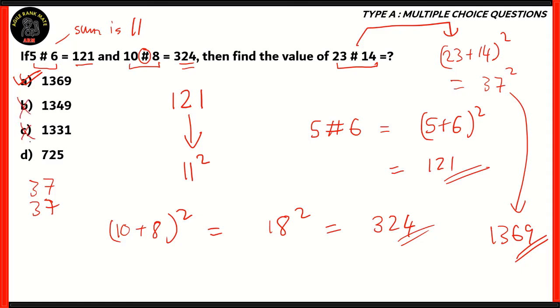The final answer would turn out to be 1369. Therefore, option A turns out to be the right option. The other numbers aren't exactly perfect squares. We did that by analyzing the relation between the right-hand side and the left-hand side. Hashtag stands for square of the sum of the two numbers.